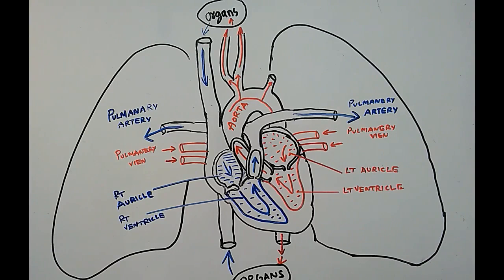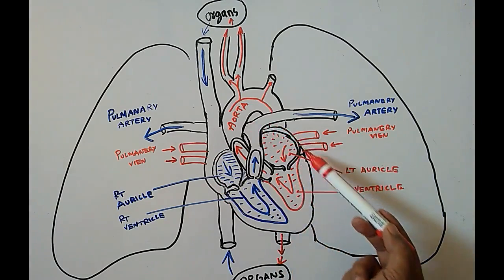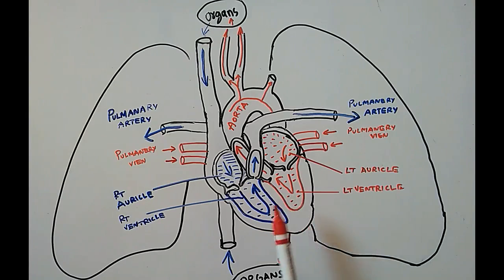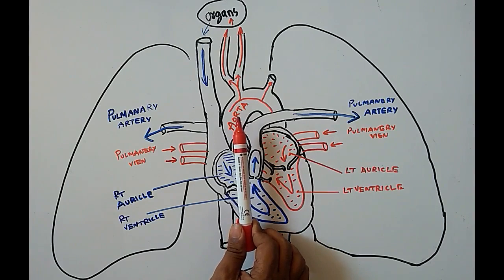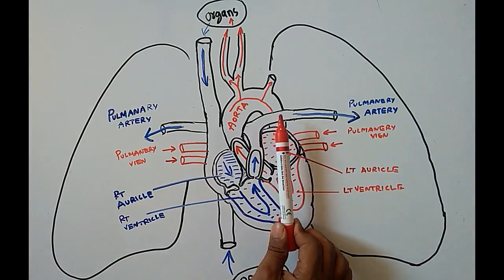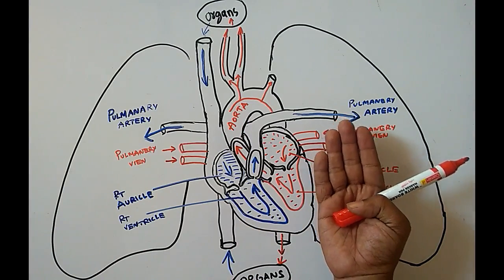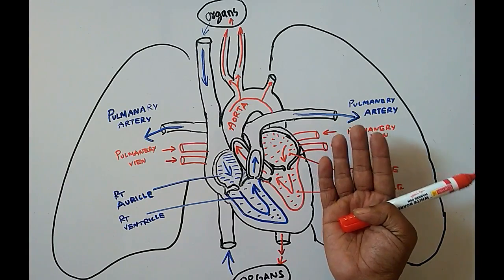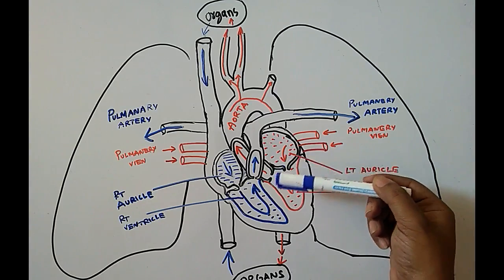The heart has four chambers, as you can see here. The heart is not exactly at the center — it is slightly towards the left side of our body. From our perspective it appears on the right, but for the body it is on the left side. The human heart is made up of four chambers.